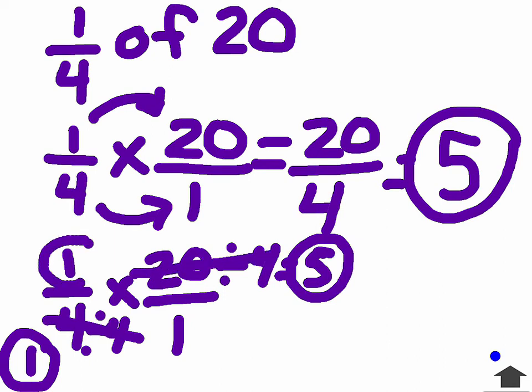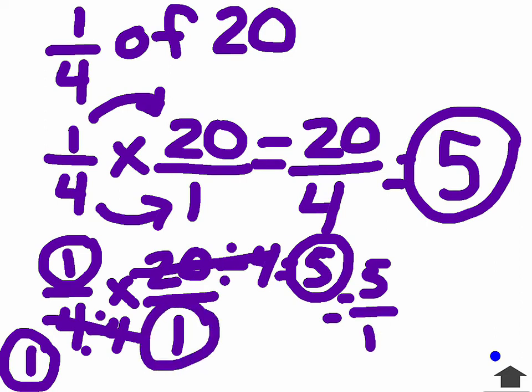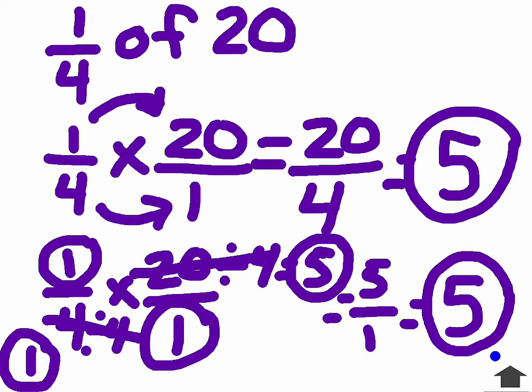So now I take my numerators, one times five, which equals five, and my denominators, one times one, which equals one. Anytime I have a number over a one, I know that my answer is just that top number because it is representing a whole number. So my answer is going to be five.